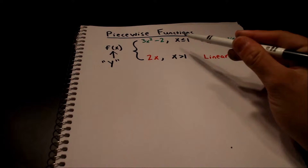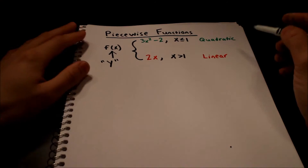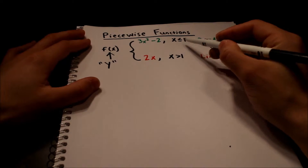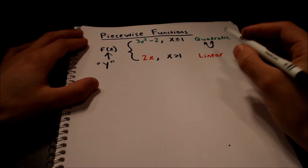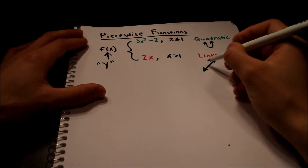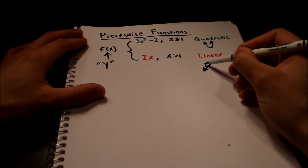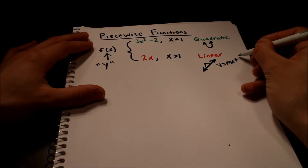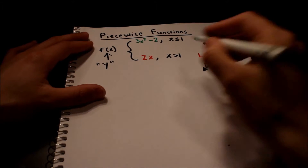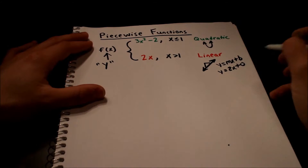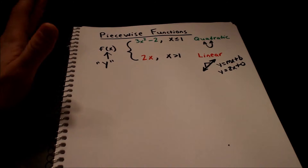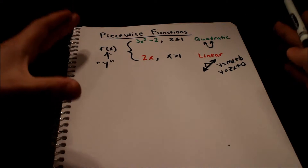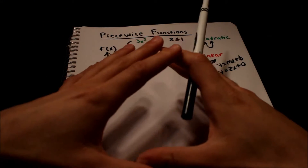So back to this green one — the green is going to be a quadratic because there's an x squared in there. When you graph a quadratic, it takes this sort of u-shaped form. The linear one is going to be a straight line with a constant slope — remember, slope is rise divided by run. So m equals 2. We know the red one is linear because it's actually y equals 2x plus 0, where b is 0 and m is 2.